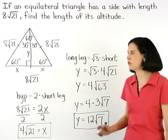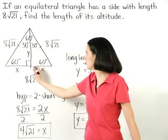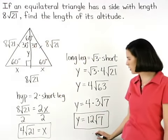So, the altitude of our equilateral triangle has a length of 12 root 7.